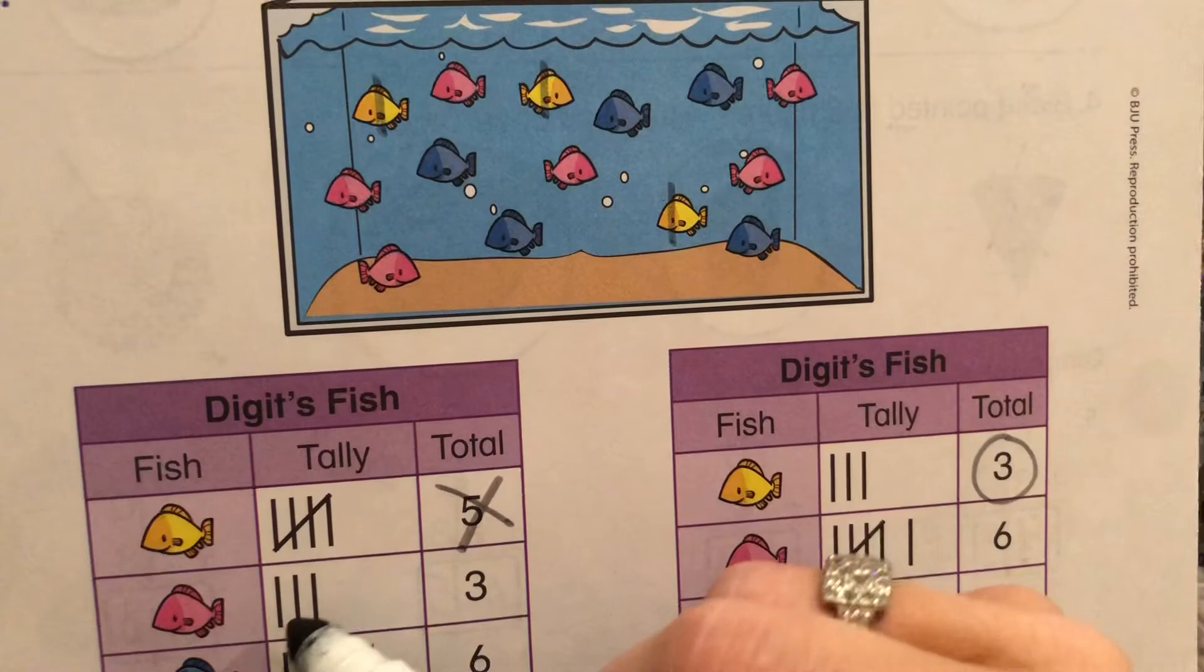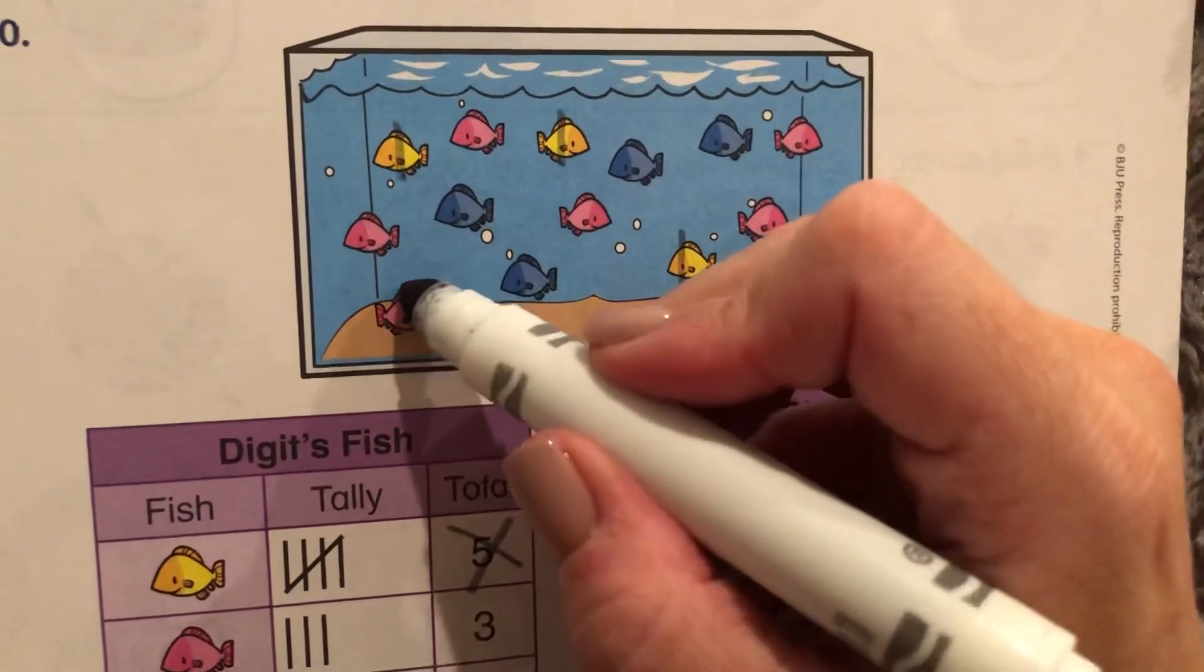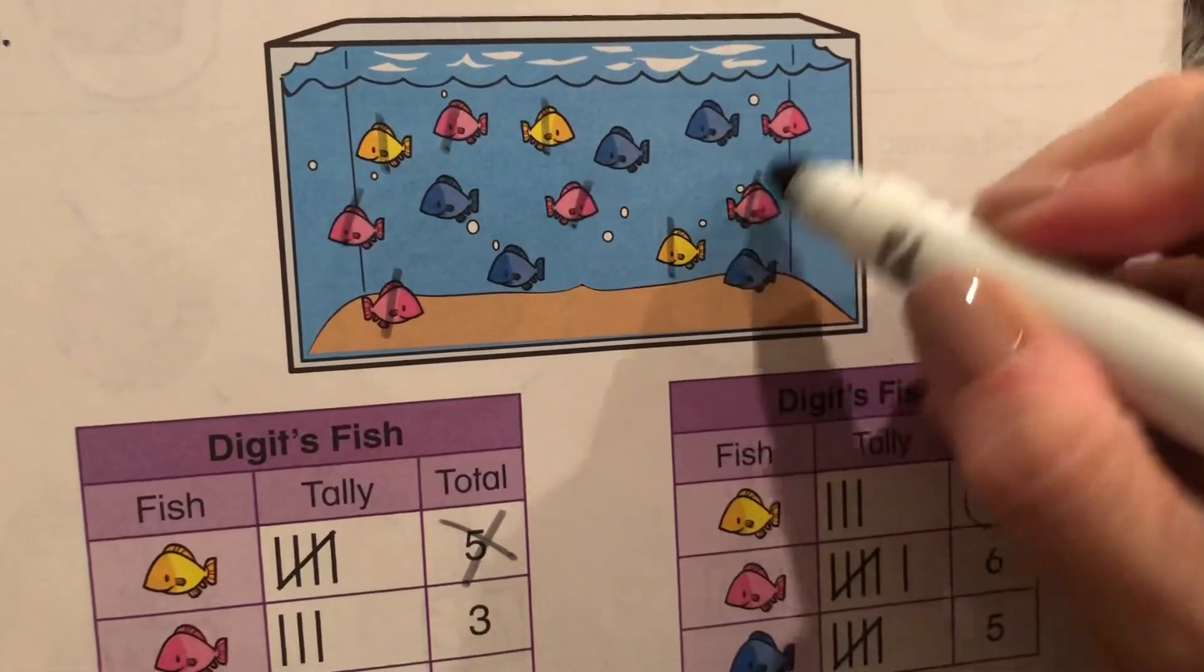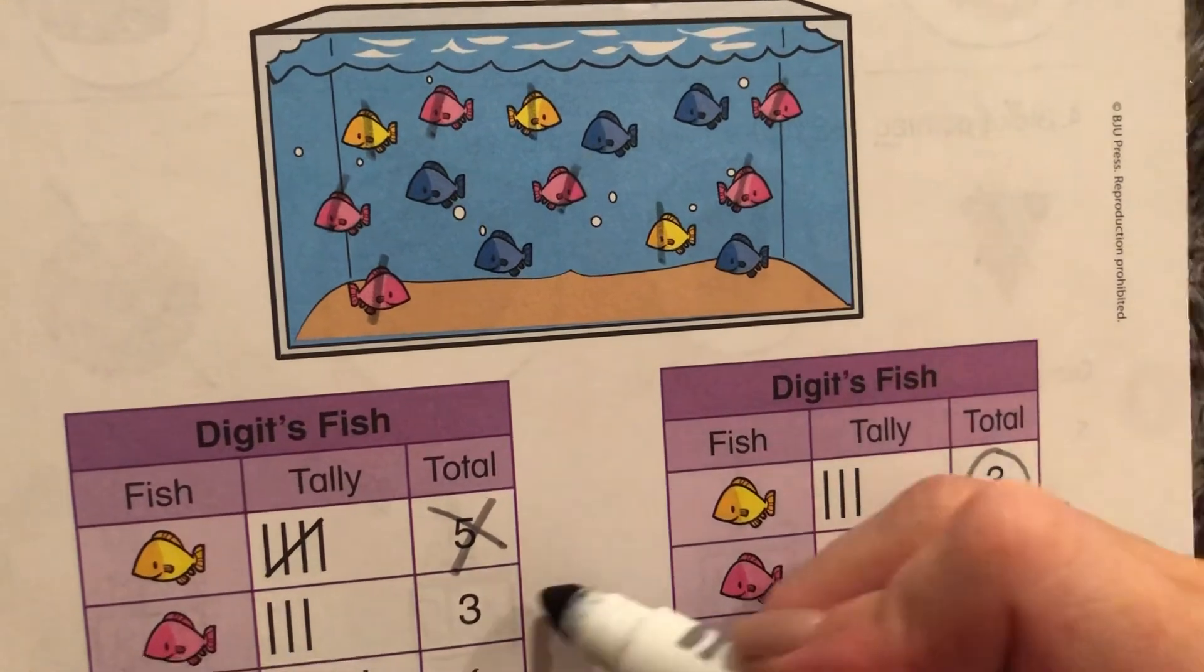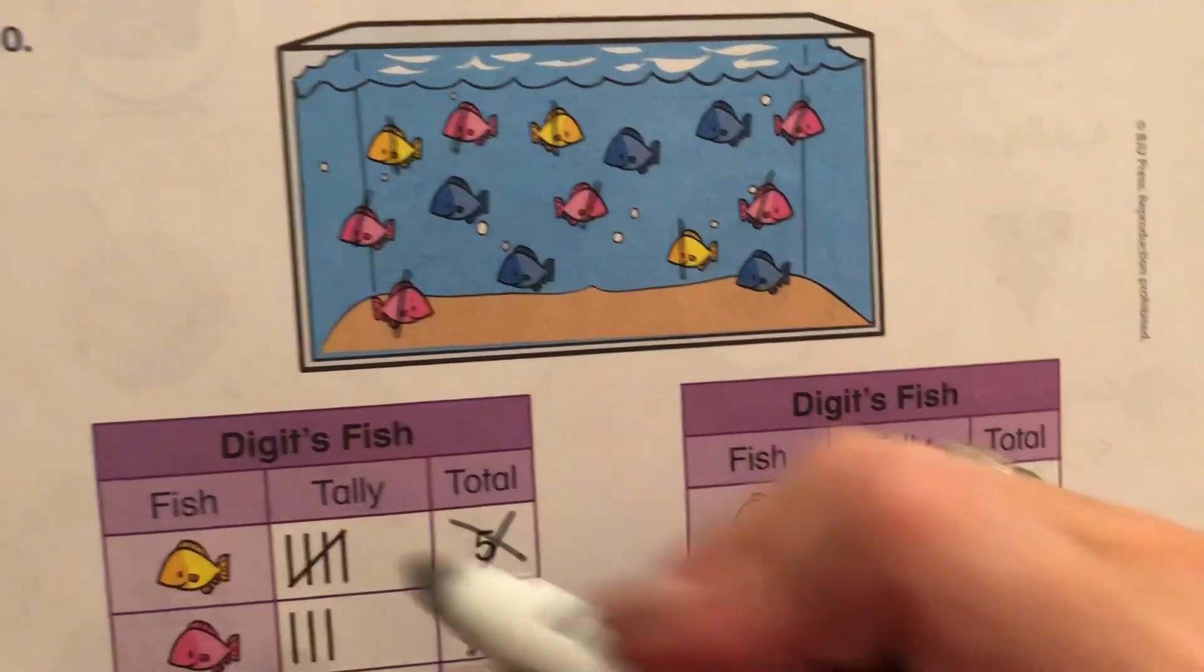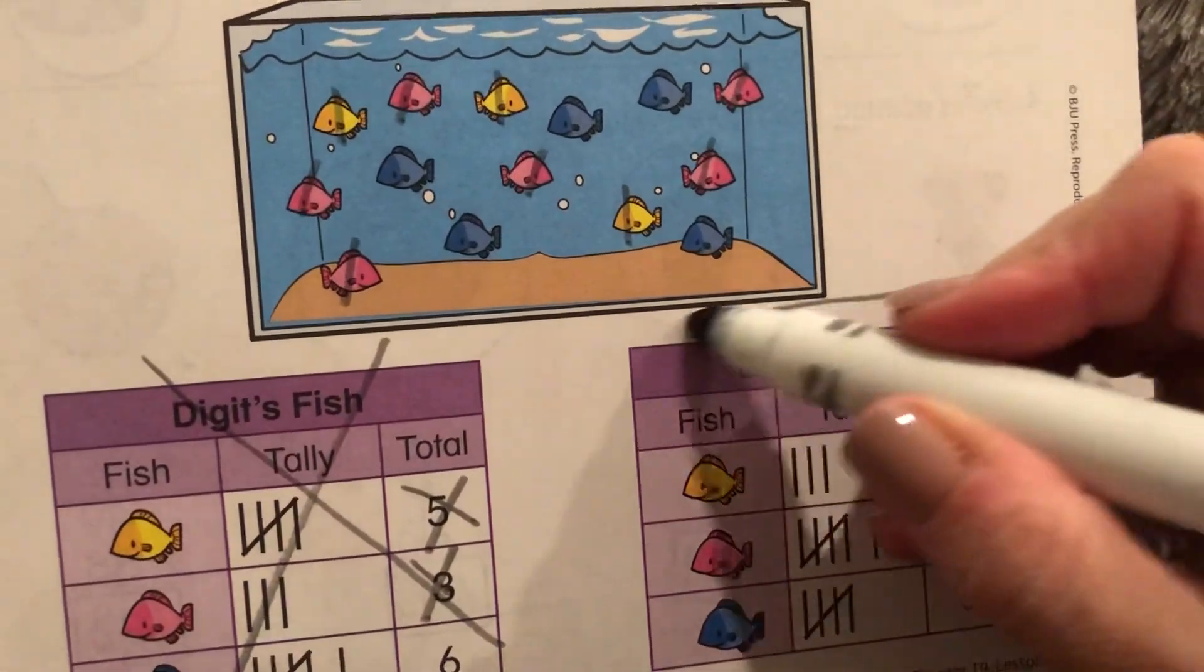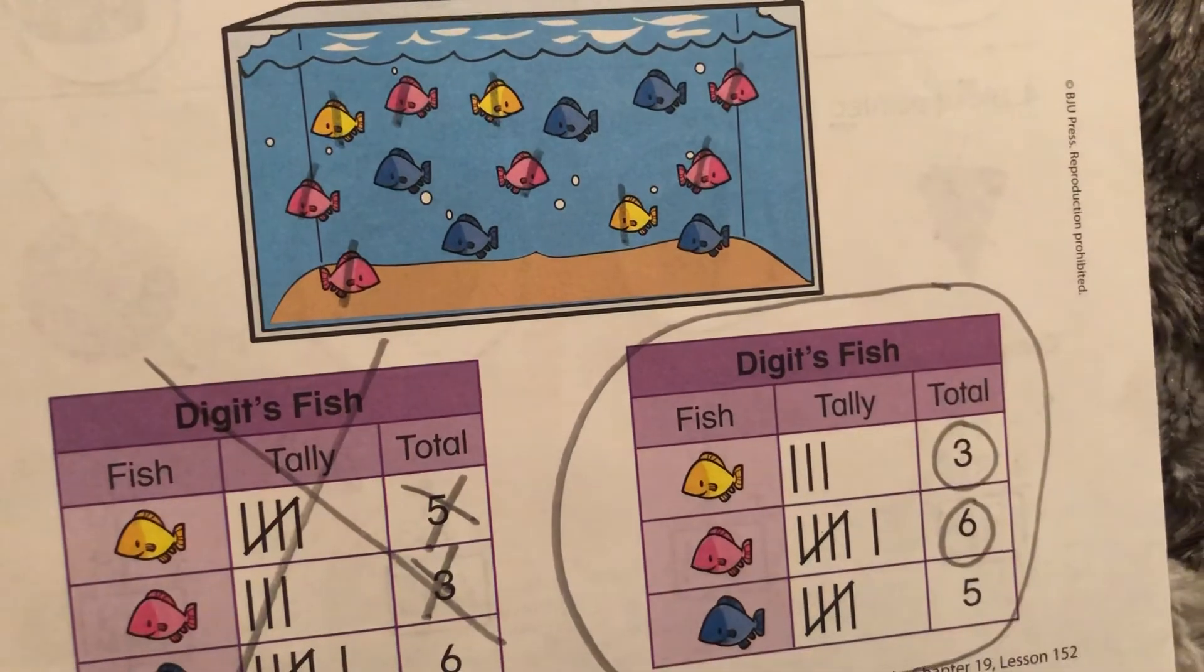How many pink? Three pink. There's more than three pink. There's one, two, three, four, five, six pink. So if this has been wrong twice, this guy is not the correct tally chart, right? This is the correct tally chart.